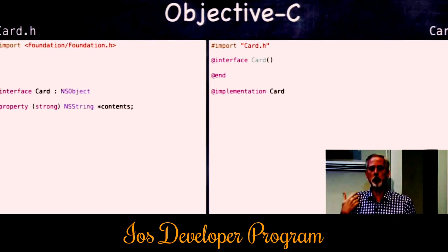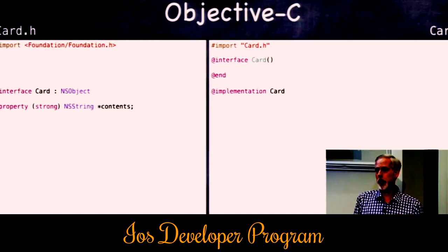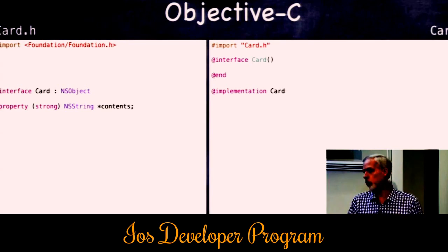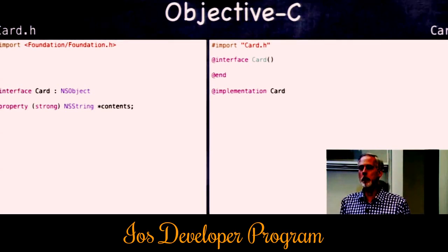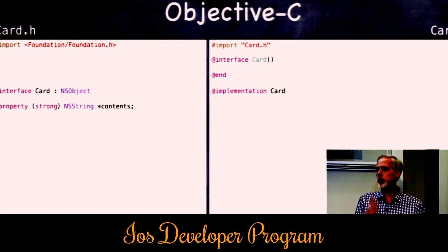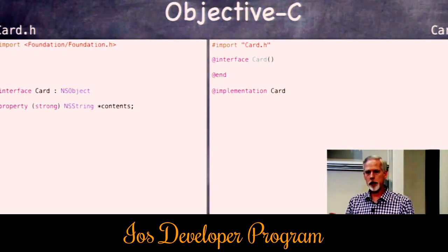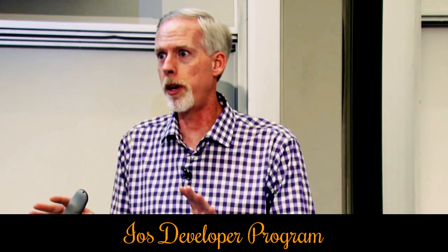This is called Automatic Reference Counting (ARC) — much better than garbage collection because it's very predictable; you know exactly when things are released. If a property is weak, that tells Objective-C: 'keep it as long as someone else has a strong pointer; when no one does, free it and set this pointer to nil.' Nil means zero — the pointer doesn't point to anything.